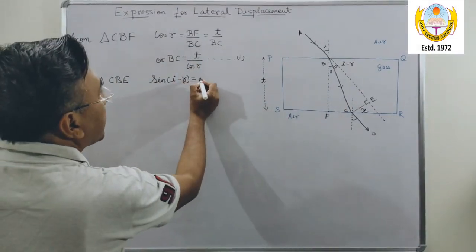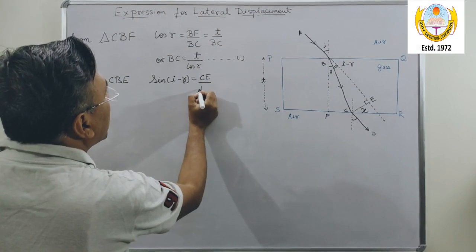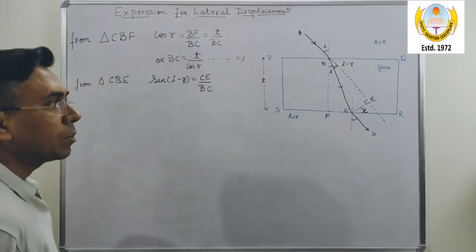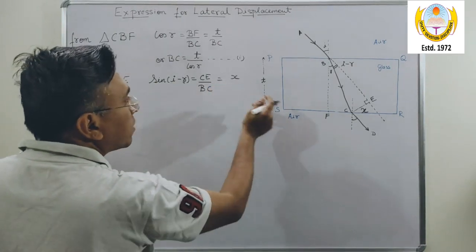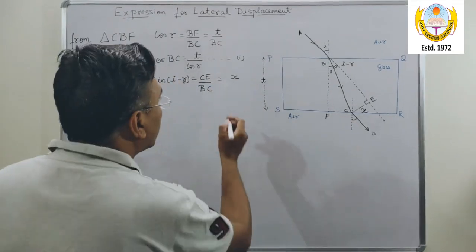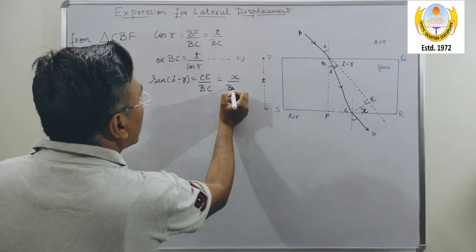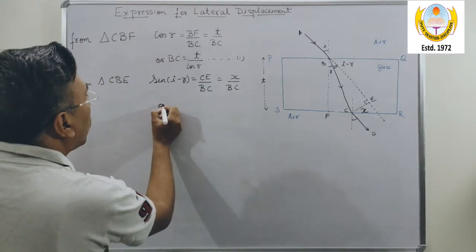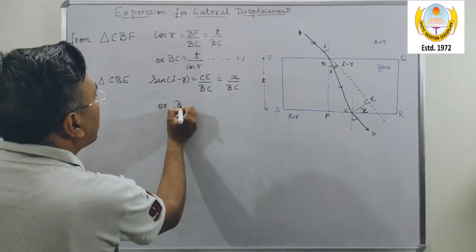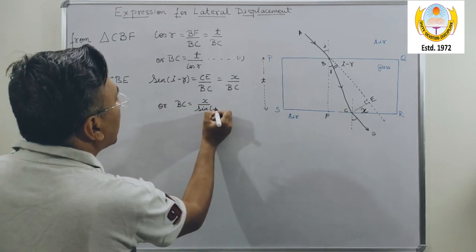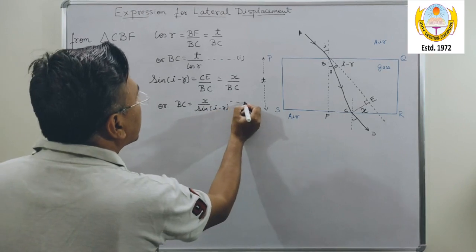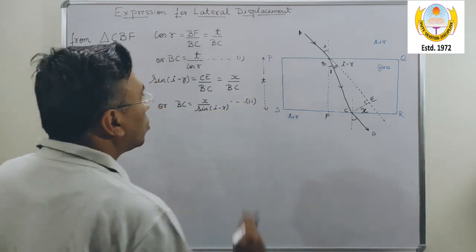And CE is X upon BC, or I can write BC equals to X upon sine of I minus R. This is expression number 2.